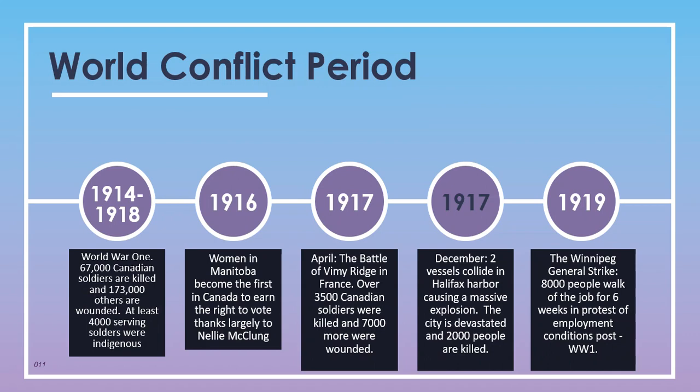Moving into the world conflict period: between 1914 and 1918, World War I saw 67,000 Canadian soldiers killed and 173,000 others wounded. At least 4,000 soldiers serving during this war were indigenous Canadians. In 1916, women in Manitoba became the first in Canada to earn the right to vote, thanks largely to a woman named Nellie McClung. Later in the course, I will create and post a lesson strictly on women's suffrage and women's rights in Canada.